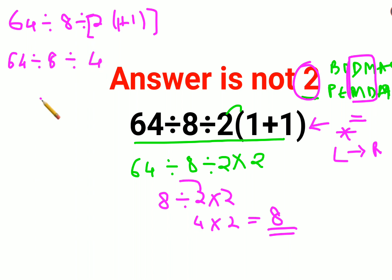So we have 64 divided by 8, that gets you 8, divide by 4. At that time, the answer comes out to be 2. But if there was a bracket, only then the answer will be 2.